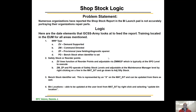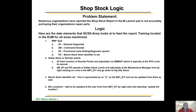So shop stock — I call this shop stock logic. The problem is numerous organizations have reported that the shop stock report behind Launchpad is not actively displaying their organization's parts. There are four different MRP areas we use. ZV is your demand-supported lines. These lines are based off demand analysis — if you order a part three times within six months, it becomes demand-supported. That's your ZV lines.